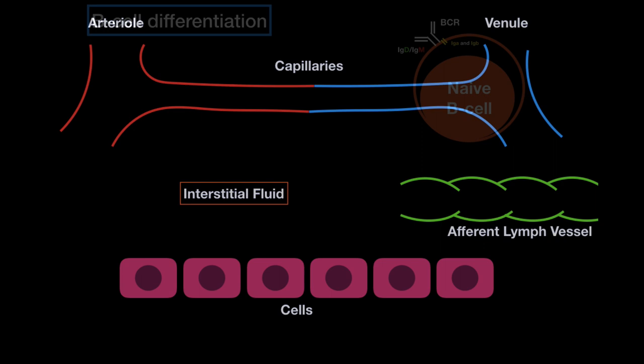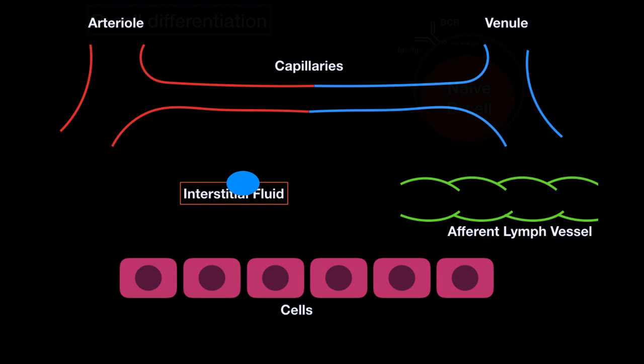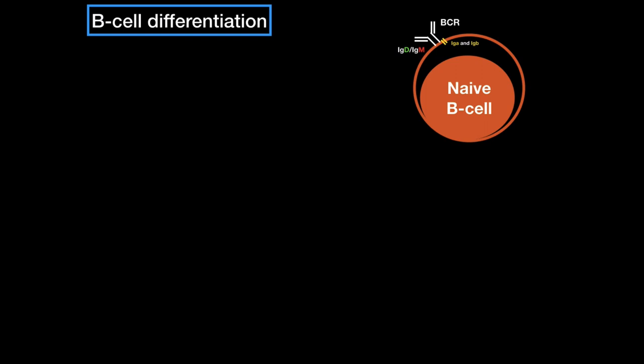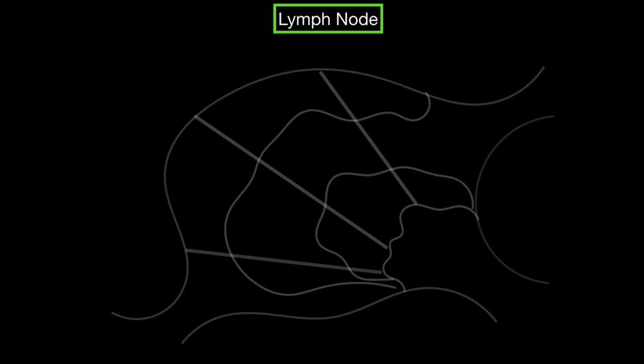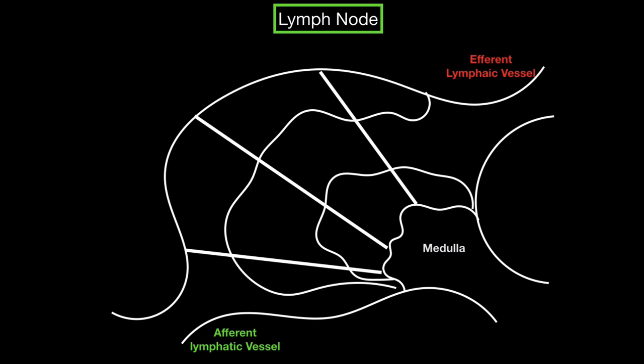If one of the bacteria that initially infected us gets drained by the lymph vessels — remember, the lymph vessels drain the interstitial fluid and can also drain bacteria — they end up in the lymph nodes. The lymph node has an efferent lymph vessel, a medulla, a paracortex where the T cells are (the T cell zone), and an outer cortex where the B cells are.